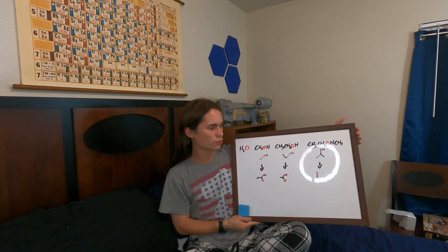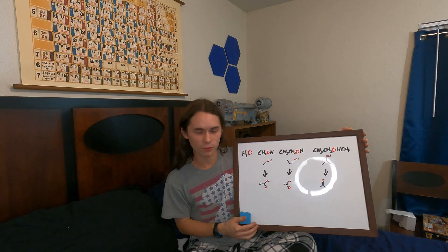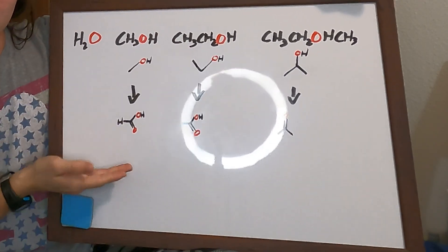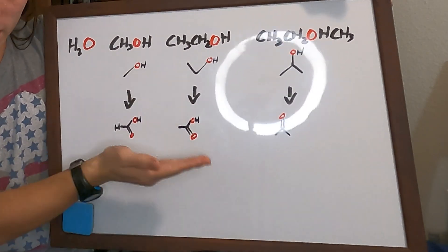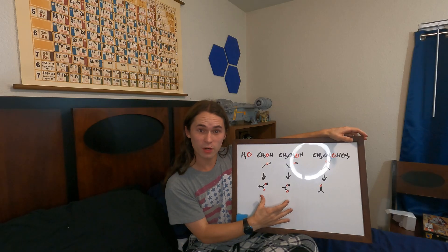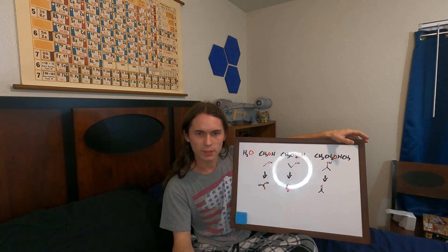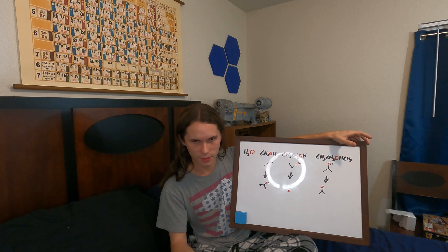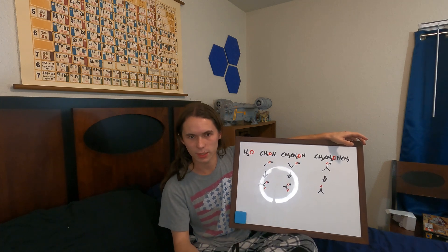One thing you may have already caught on to is that alcohols in and of themselves are not the only thing that alcohol is putting into your body. And I'm not talking about all the different additives in any particular kind of booze. What I mean is alcohols get metabolized. I've kind of very basically drawn that out here. Methanol gets metabolized to formic acid. Ethanol gets metabolized to acetic acid. And isopropanol becomes this fun little thing we're going to get into in a bit. For both methanol and ethanol, there is an additional aldehyde intermediate that becomes relevant. In the case of methanol, that's formaldehyde, and in the case of ethanol, that's acetaldehyde.